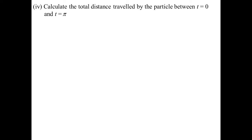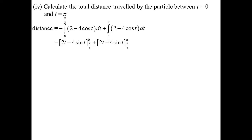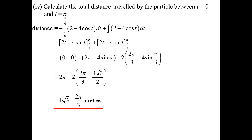Calculate the total distance travelled from t = 0 to t = π. Since they asked for distance, we break it up into above and below the axis. The t-intercept is at π/3 (found in part i). So we take the negative of the integral from 0 to π/3, plus the integral from π/3 to π. Flipping the limits on the first integral removes the negative sign, and subtracting gives the exact answer: 4√3 + 2π/3 metres.